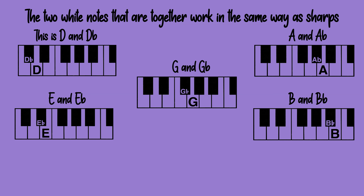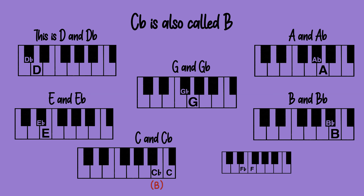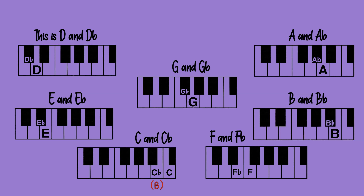The two white notes that are together work in the same way as sharps. Here is C and here is C flat. C flat is also called B. This is F and F flat. F flat is also called E.